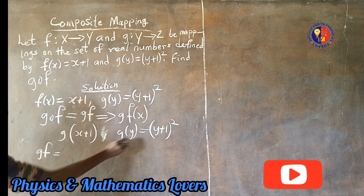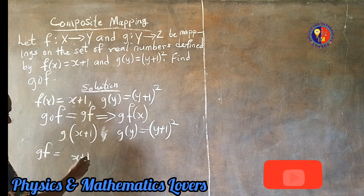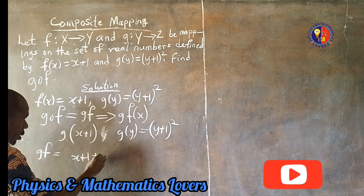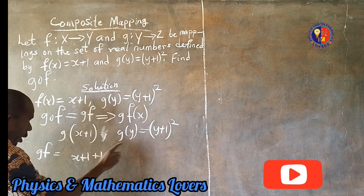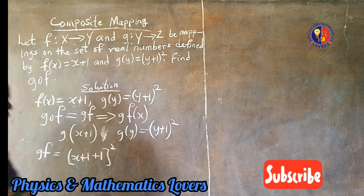then we plug it to the original function of g, which is y plus 1. So in that place of y, you put what? x plus 1, okay? Then we have another plus 1 inside. Okay, there's another plus 1 here. Then, all squared.